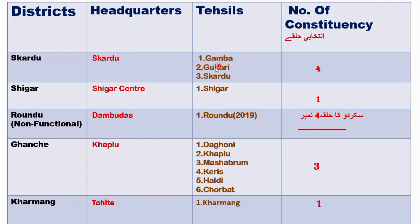Tehsils in Skardu: three Tehsils — Tehsil Gamba, Tehsil Gultari, and Tehsil Skardu. In Shigar, there is only one Tehsil: Tehsil Shigar. Note that the number of Tehsils may increase in future; this information is current as of 2023. In Randu, there is Tehsil Randu. In Ghanche, there are six Tehsils: Tehsil Dhoni, Tehsil Khaplu, Tehsil Mashabrum, Tehsil Keres, Tehsil Haldi, and Tehsil Chorbat. In Karmang, there is only one Tehsil: Tehsil Karmang.